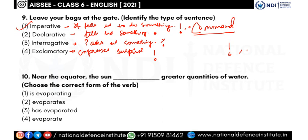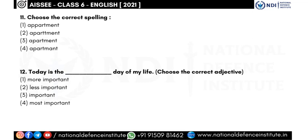The tenth question: 'Near the equator, the sun ___ greater quantities of water.' Options: is evaporating, evaporates, has evaporated, evaporate. 'Has evaporated' and 'evaporate' deal with past or base forms. 'Is evaporating' is present participle. Near the equator, evaporation is a continuous, ongoing process — it keeps happening all the time. The answer is 'evaporates.'